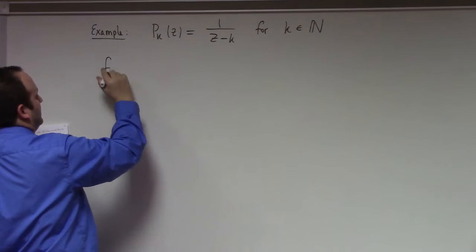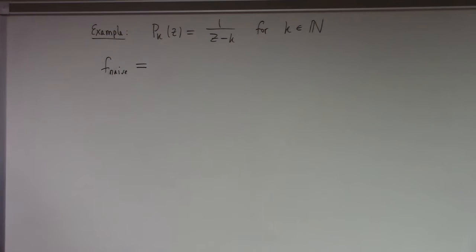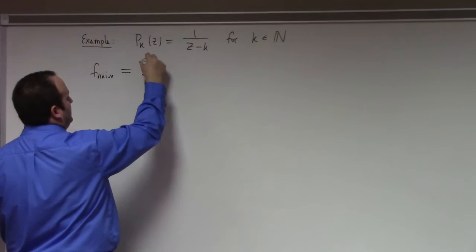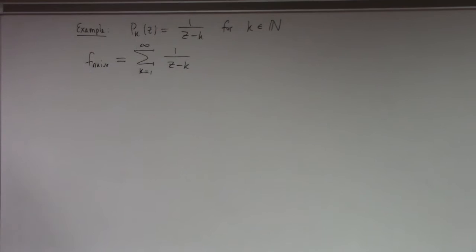What function would you think would give you back these singularities? So, I mean, you want the singularity at 1, at 2, at 3, at 4. How about just add these together, right? Just add these together. That would be sort of the naive thing to do. Sum k equals 1 to infinity of 1 over (z minus k). I mean, so the first thing you might try is just to basically sum over the principal parts that you've been given.